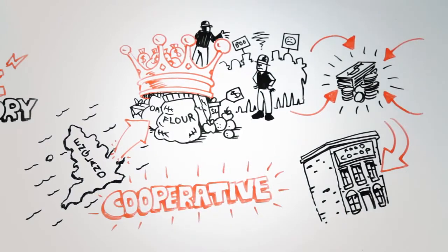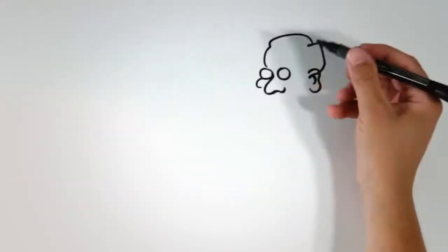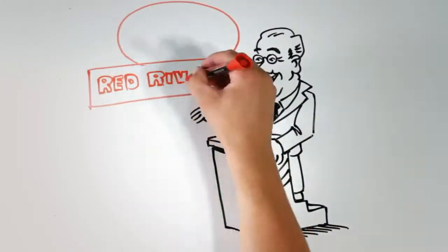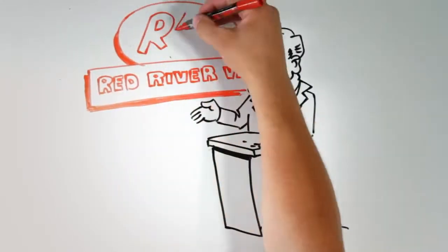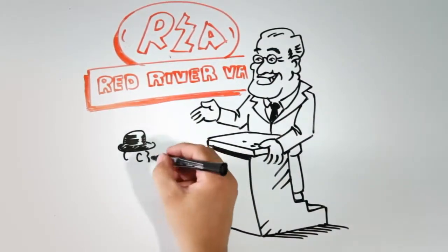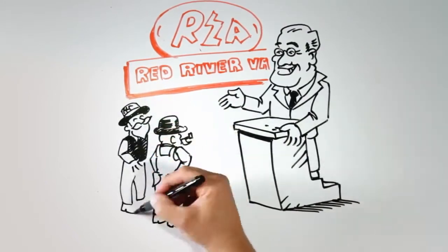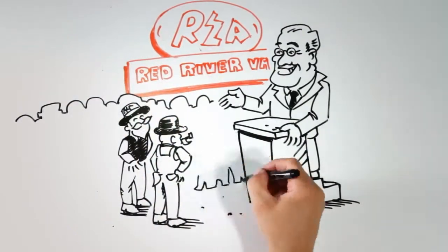The idea caught on here in the US. President Roosevelt gave electric cooperatives a jumpstart with the founding of the Rural Electrification Administration, the REA, telling American farmers and ranchers if you want electricity, you can do it yourselves.